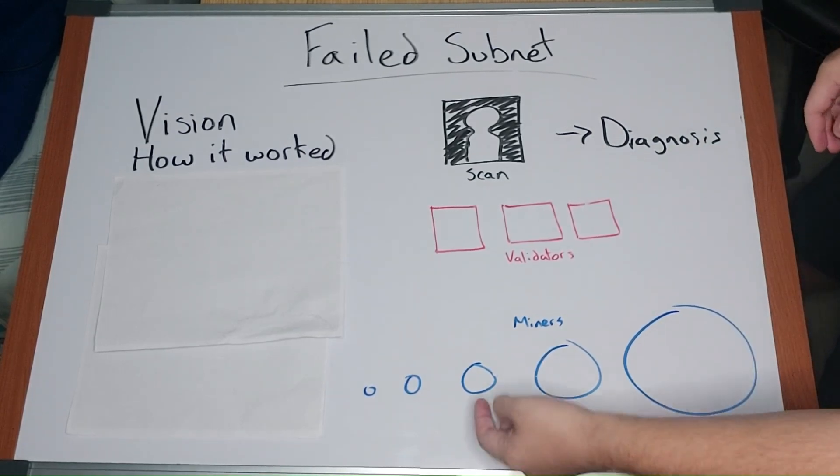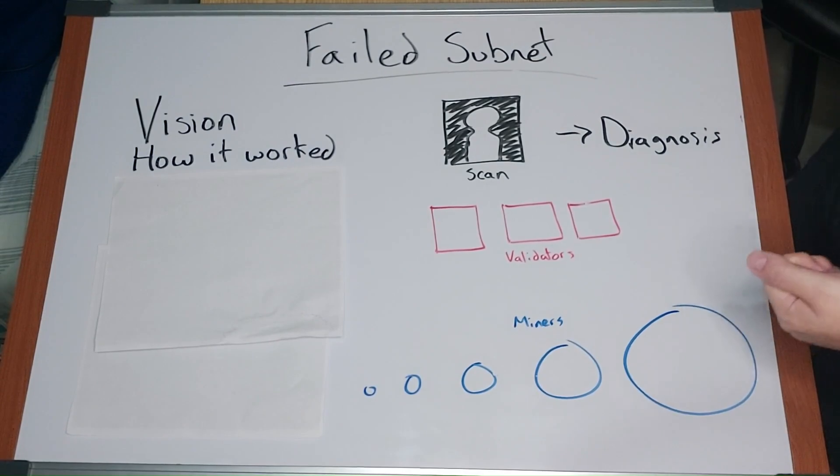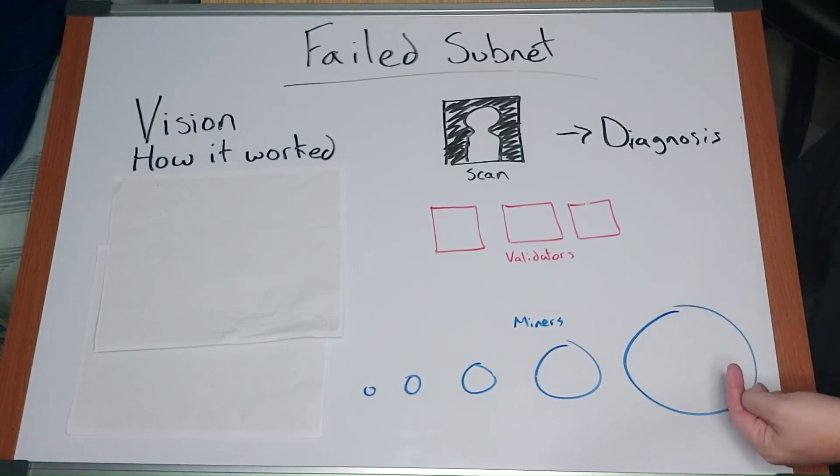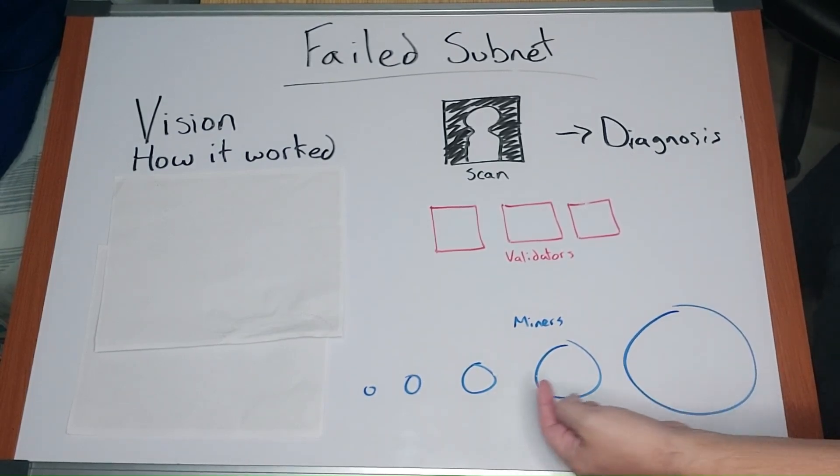Validators rank ordered the miners' loss, which is a way of determining how good an AI is at its task. They then distributed rewards based on the loss of miners.